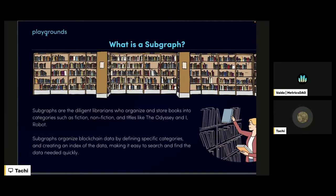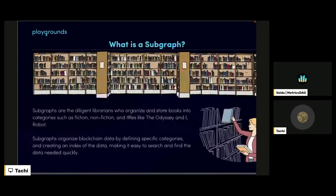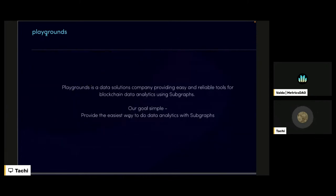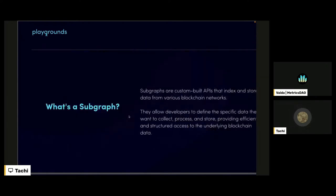More technically speaking, a subgraph is simply a custom-built API that indexes and stores data from various blockchain networks. This allows you to query, collect, process, and store that data in an efficient and structured manner, so it's much easier to find the blockchain data that you need.